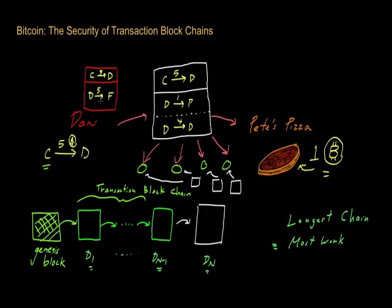Now it's important to keep in mind that if Dan just tried to spend these same coins again without trying to cover his tracks, then everybody out there would know that Dan is up to no good, because they can see from the existing longest transaction blockchain that Dan already spent these coins before and shouldn't be allowed to spend them again.